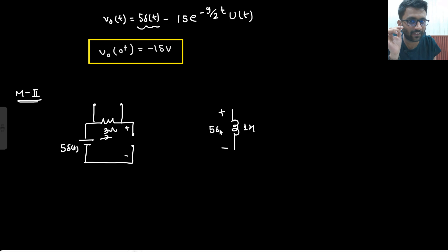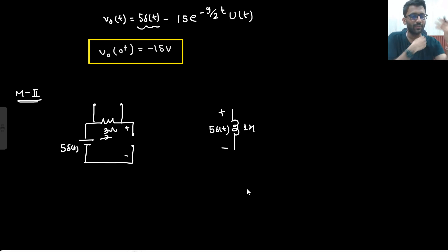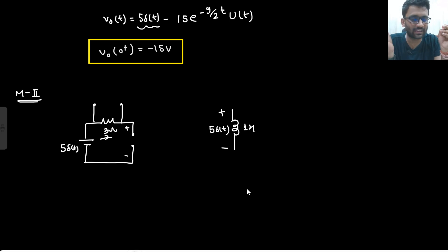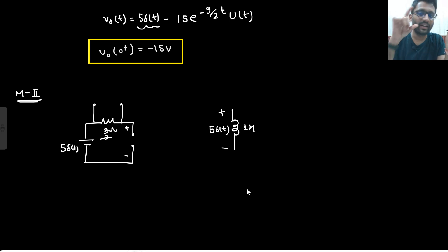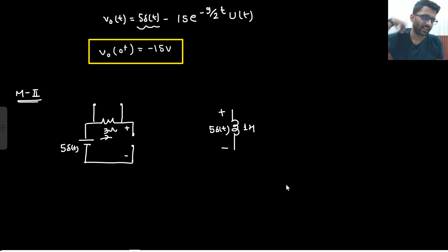If there is impulse voltage across the inductor — infinite voltage across the inductor — it will change its current instantaneously. Inductors generally do not change their current instantaneously: if at t equals 0 minus it is 0, then at t equals 0 plus it will also be 0. But only in the case of infinite or impulse voltage will it change its current instantaneously. In the case of a capacitor: if there is infinite current, then it will change its voltage instantaneously. You can prove this — the proof is already given in the transient analysis chapter.